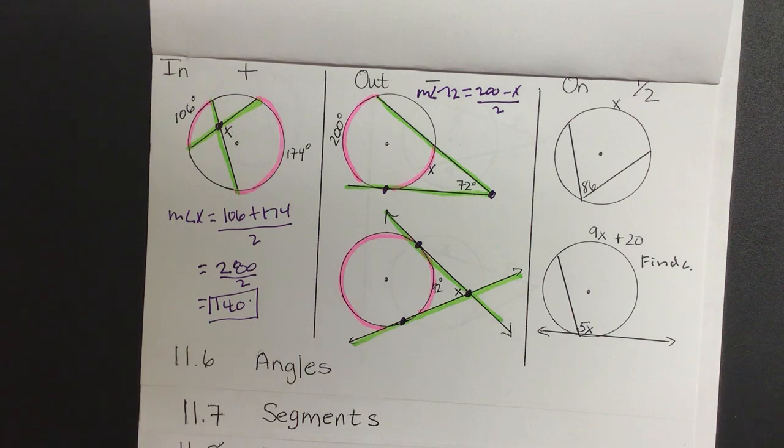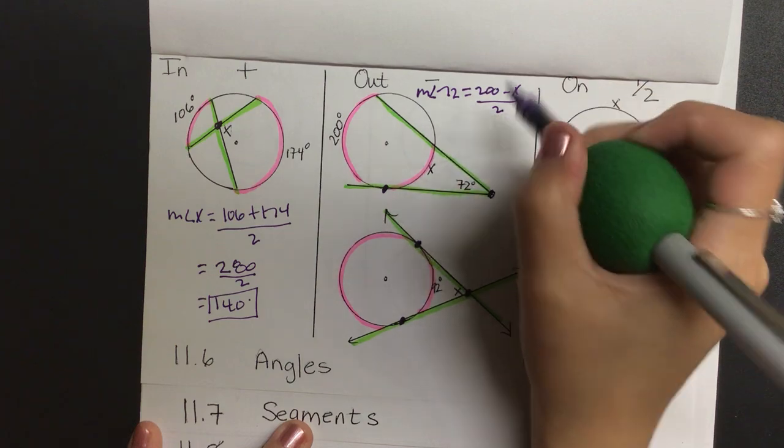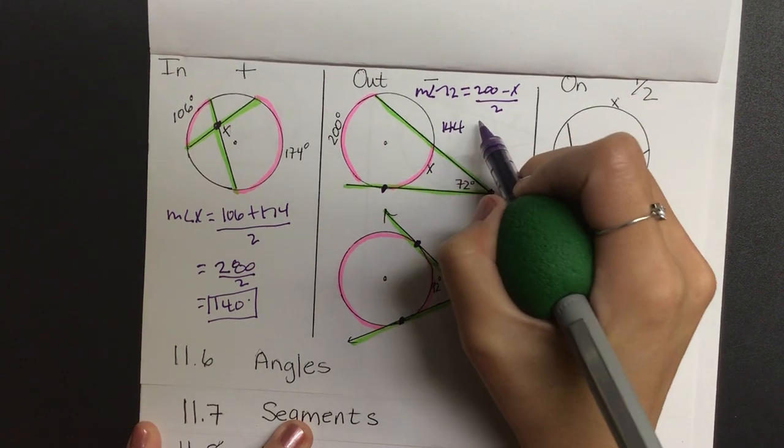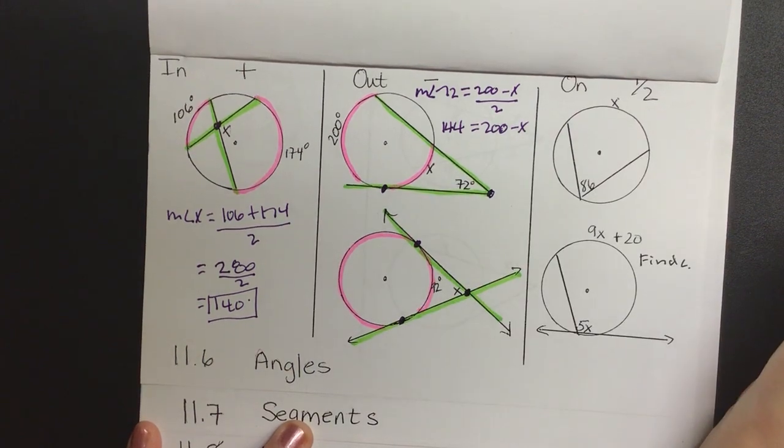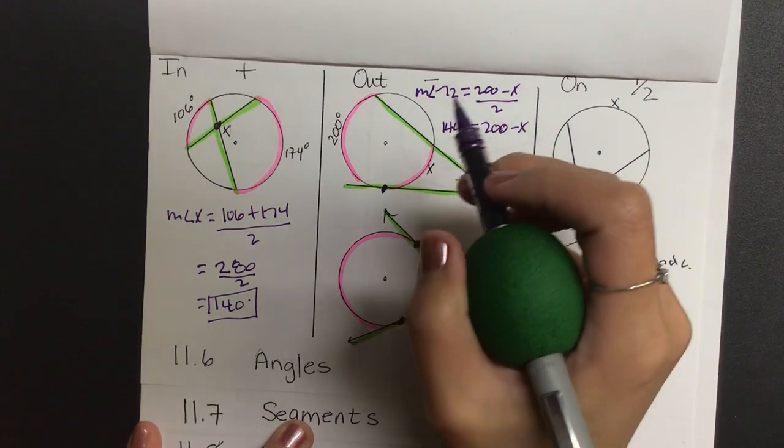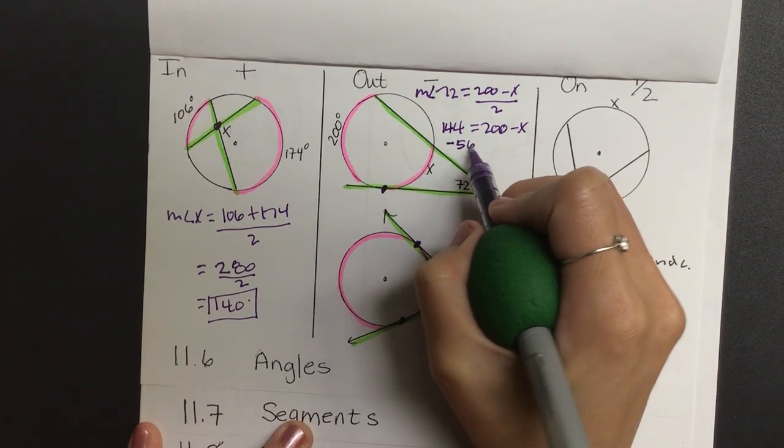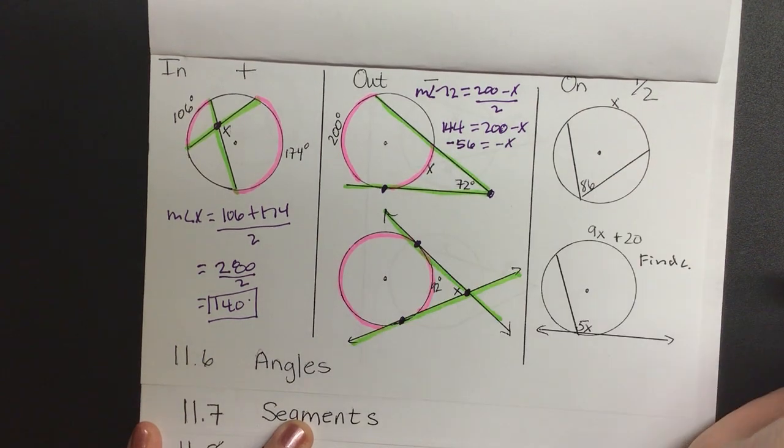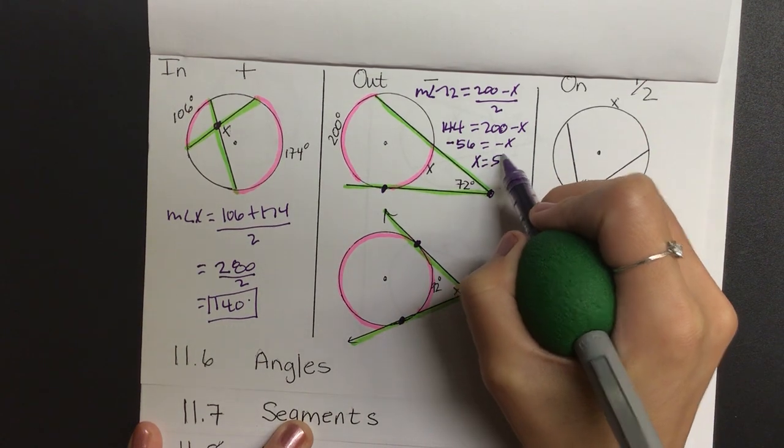I should really just put 72 degrees on there. Same thing. What is 2 times 72? 144. Did I have 200 minus x? What about when I subtract 200 on both sides? Negative 56 is equal to negative x. And now when I make the x positive, what is that angle measurement? 56.